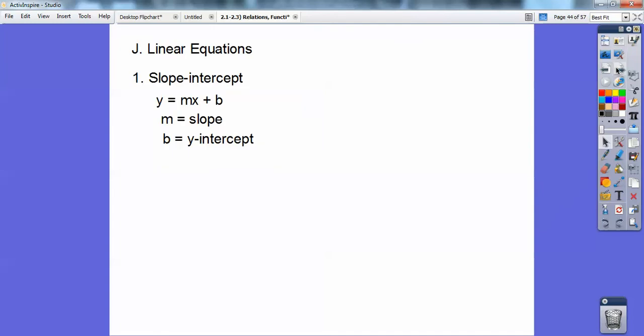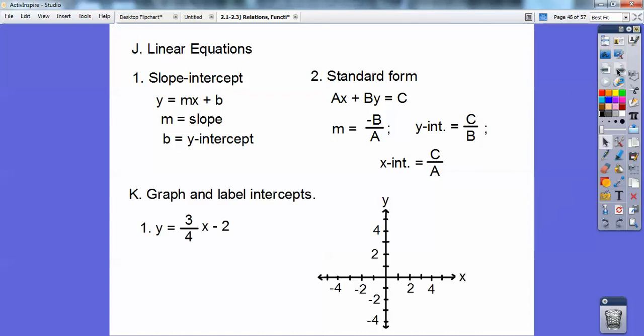All right, so linear equations. You guys remember this from Algebra 1. Slope intercept is y equals mx plus b. This is the slope. This is the y-intercept where it crosses the y-axis. Standard form, ax plus by equals c. Your books, I'm sure, didn't give this stuff to you, but the slope, when it's written like this, is just opposite the number in front of y over the number in front of x. Your y-intercept is just this number over the number in front of y, and your x-intercept is c over a.